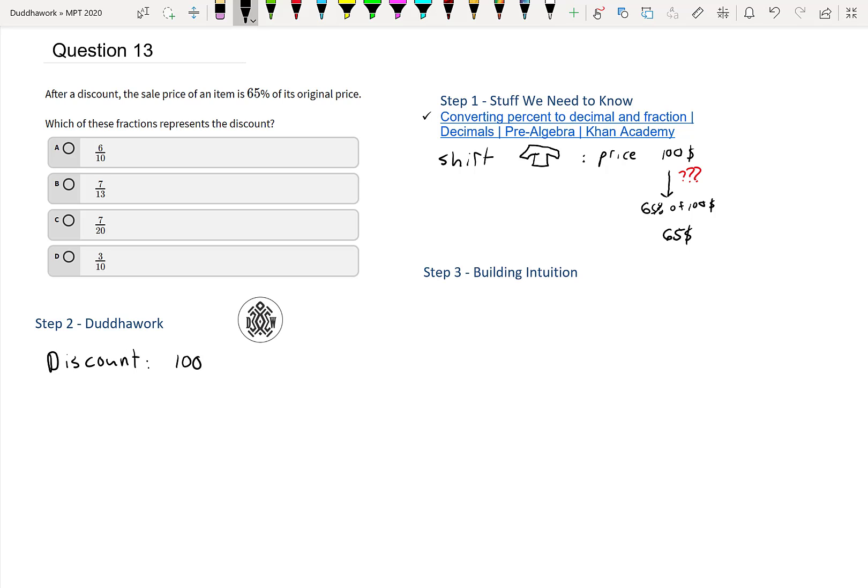Discount equals 100% minus 65%, which is 35%. So now which of these fractions is equal to 35%? So let's go through them one by one. So we have A, B, C, D, and A says that it's 6 over 10. So if you divide it, or I'll do over 10. So that would be times 10 times 10. I'm allowed to do this because it's a multiplication by one.